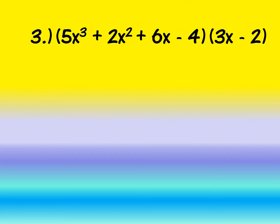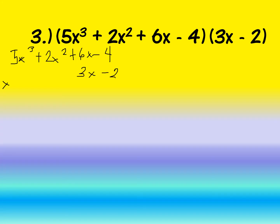Now let's proceed to our last example using the vertical method. Write vertically: (5x³ plus 2x² plus 6x minus 4) multiplied by (3x minus 2).